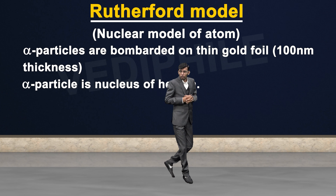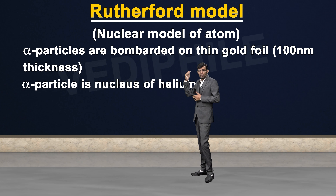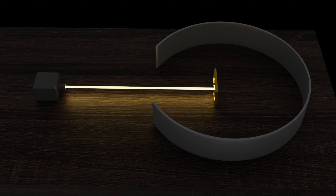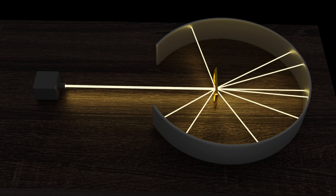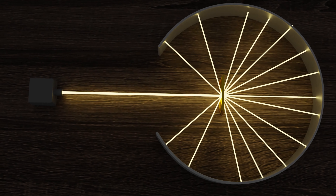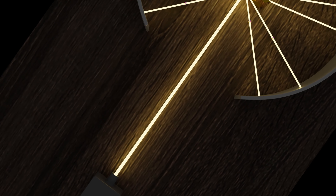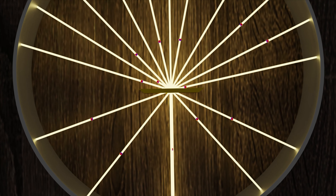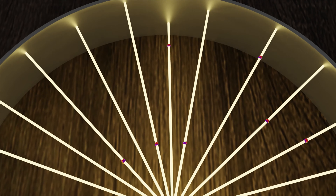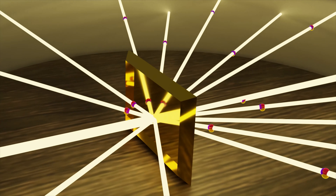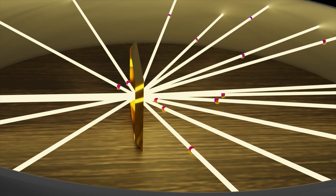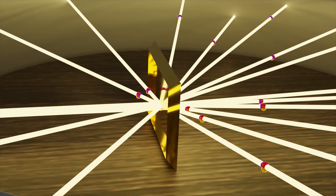These alpha particles were made incident — bombarded — from a high energetic source onto the gold foil. This gold foil was very thin, and around it a circular fluorescent screen was placed to confirm the position of the striking alpha particles — to confirm where they were hitting.